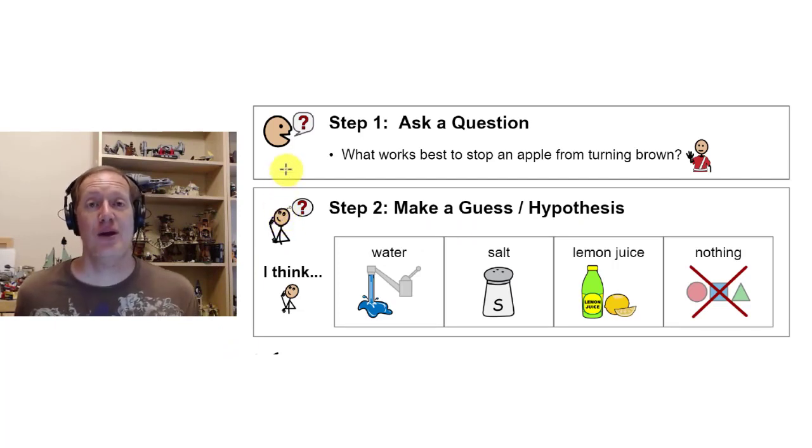All right, so for our science we need to first ask a question. And our question today is what works best to stop an apple from turning brown? So we have an apple we've cut. What works best to keep that inside of the apple from turning brown?